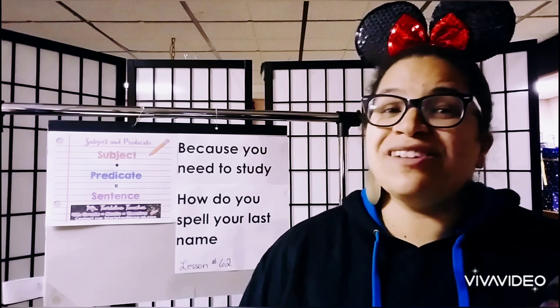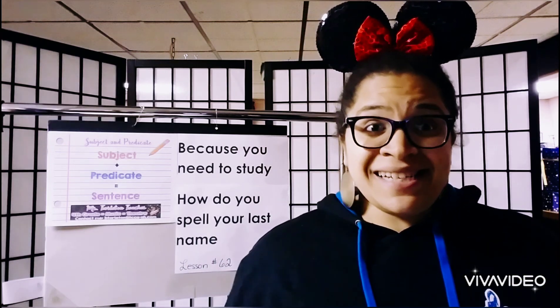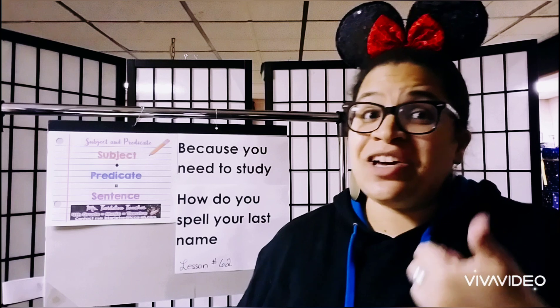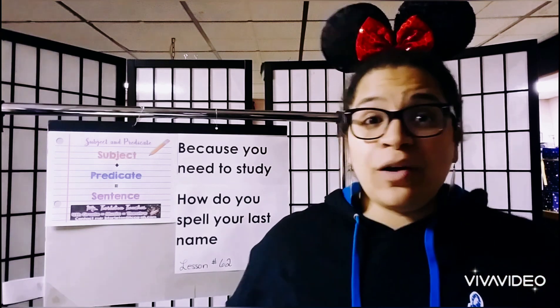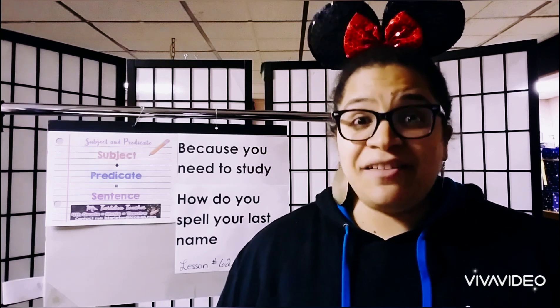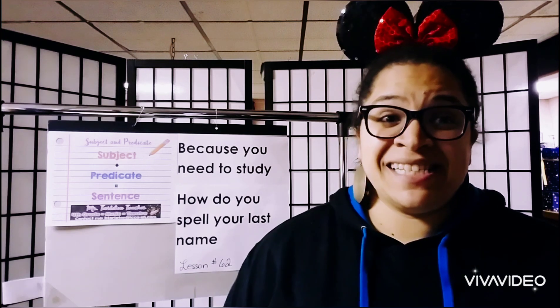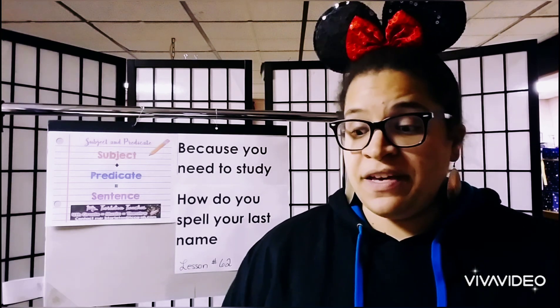We've already talked about how a sentence is a group of words which makes a complete thought. A sentence will often answer a question like who, how, when, where, why, or what, and it's a complete thought. We've talked about how you can have fragments, which are not fully complete thoughts; sentences, which have capitalization at the beginning and punctuation at the end; and run-together sentences. We're going to see examples of all three in today's lesson.